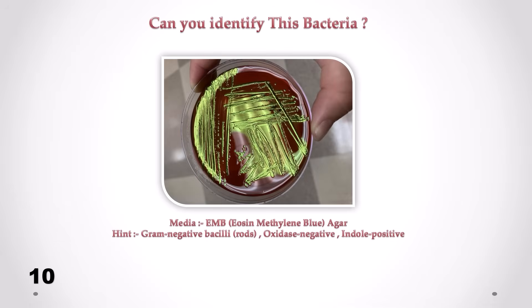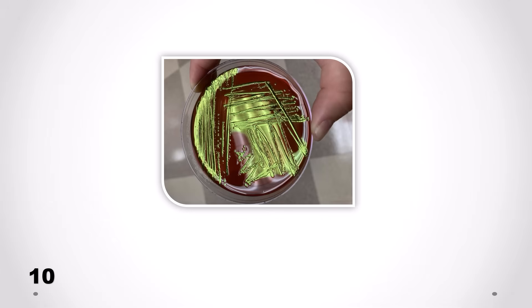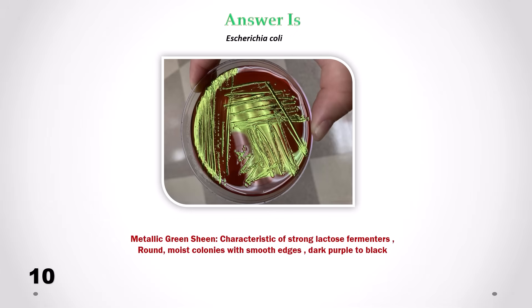Can you identify this bacteria? Correct answer is Escherichia coli. We can see the characteristic metallic green sheen, round moist colonies with smooth edges. Colony color is dark purple to black.